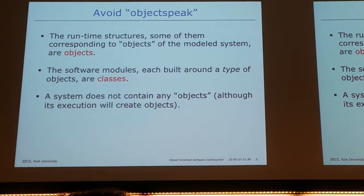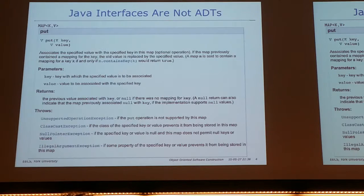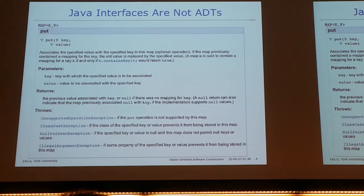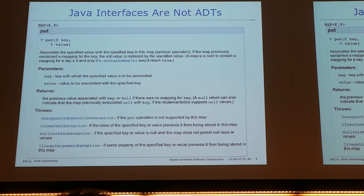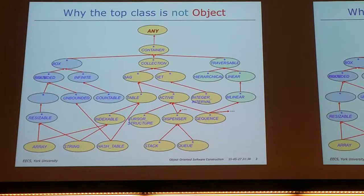We can talk about this next time. Here's just some hierarchy for IFO. At the top we have 'any.' A student asks: does 'any' mean in Java it's like an object? Exactly — that's exactly the way to see it. Objects in Java are like 'any' in IFO, because it's at the top of the hierarchy.